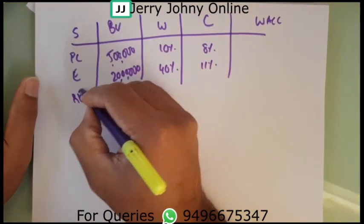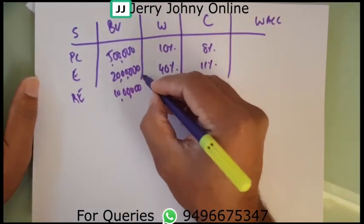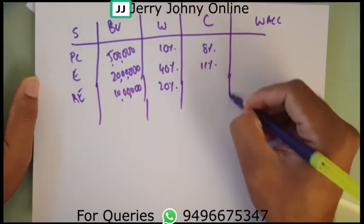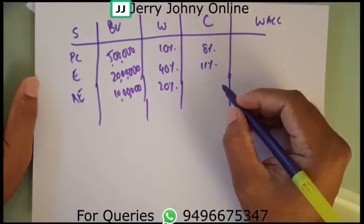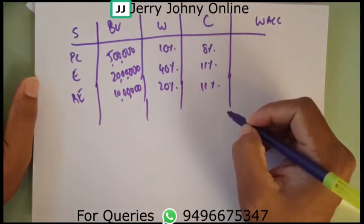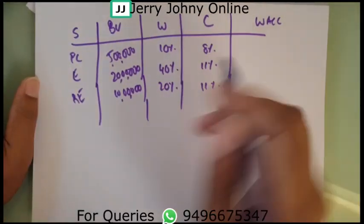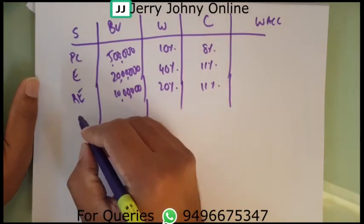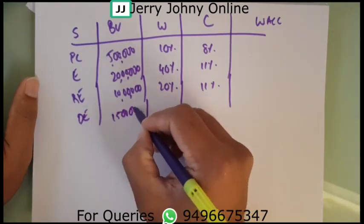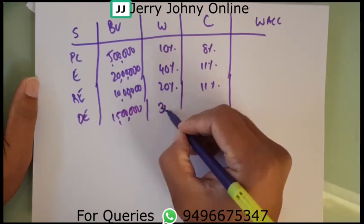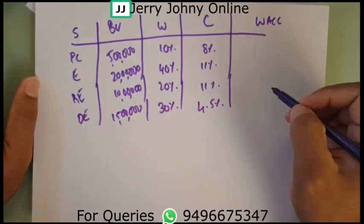Retained earnings: 10 lakhs, weight 20 percent. The cost of retained earnings — assume it will be the same as equity — so 11 percent. Debentures: 15 lakhs, weightage 30 percent, and the debenture cost is 4.5 percent.